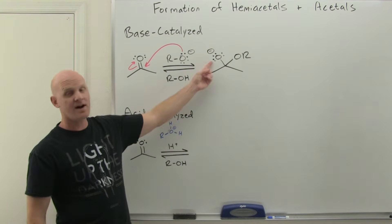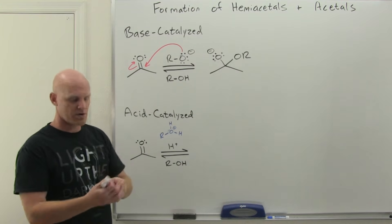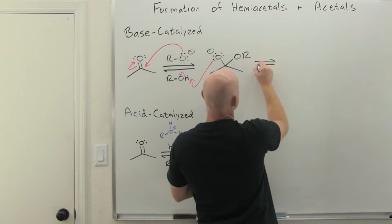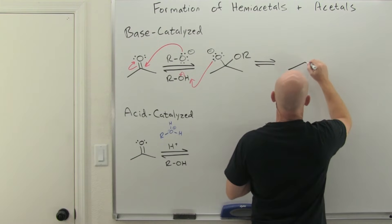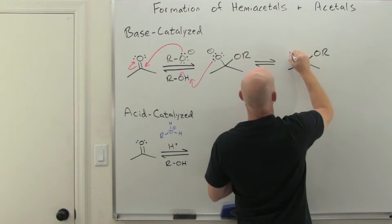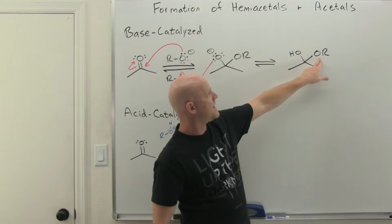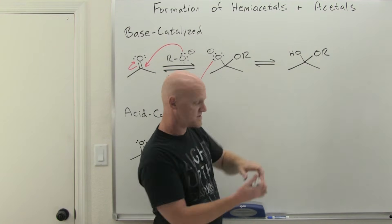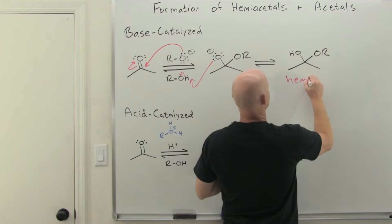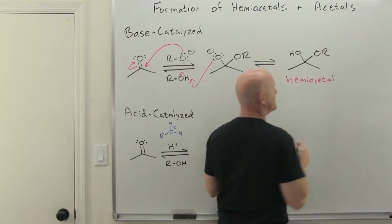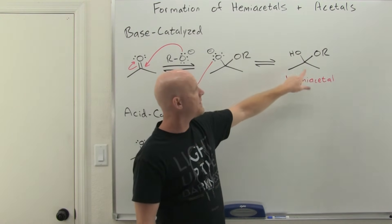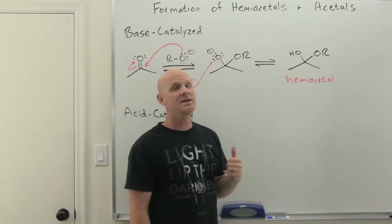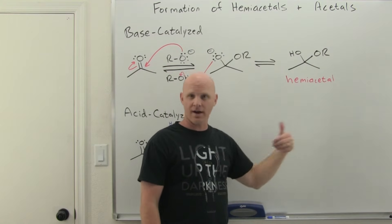We've now formed an alkoxide, and we simply protonate it using the corresponding alcohol. This is reversible all the way through, just like hydration. We've added the alkoxide to what was the carbonyl carbon on one side of the double bond, and protonated the oxygen on the other side. This is what we call a hemiacetal. You can recognize a hemiacetal because you have a carbon bonded to two different oxygen atoms — one is an OR and one is an OH.